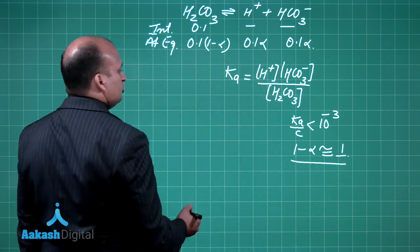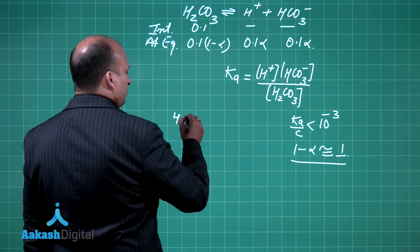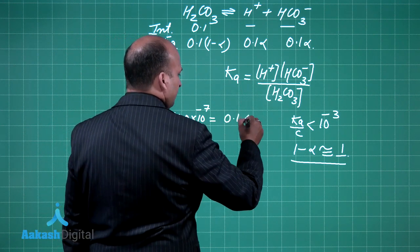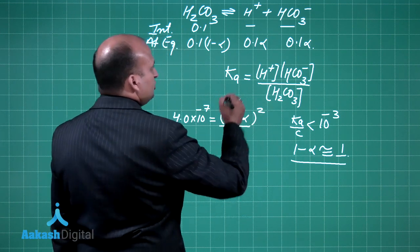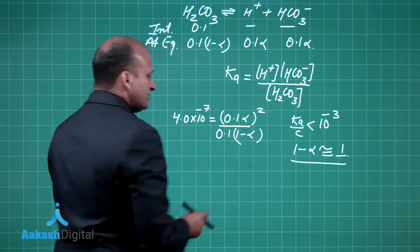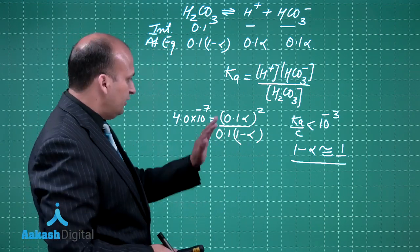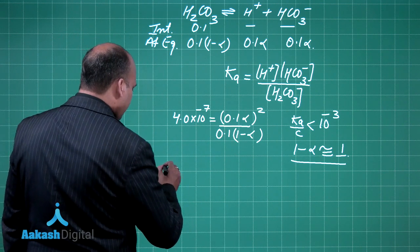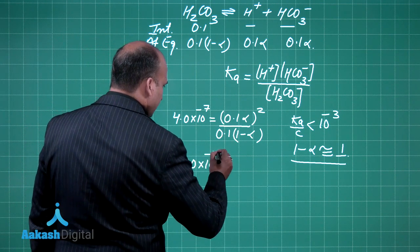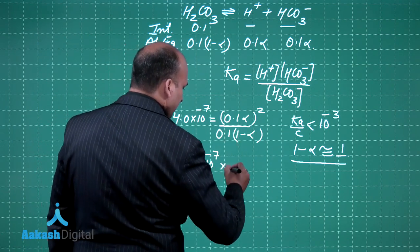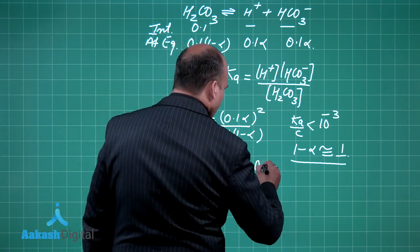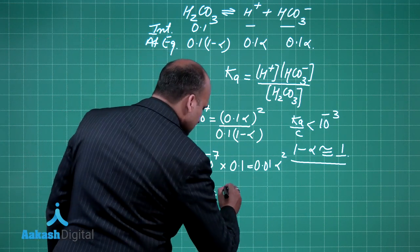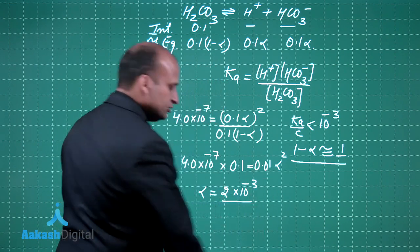Using this assumption, if I put down the values, Ka is 4.0 times 10 to the power minus 7, H+ and HCO3- I can write 0.1α² because they are the same, H2CO3 is 0.1(1-α). We are actually neglecting this 1 minus alpha. On solving, we will be getting 4.0 times 10 to the power minus 7 multiplied by 0.1 which equals 0.01α². From here, I can say alpha is 2 times 10 to the power minus 3.